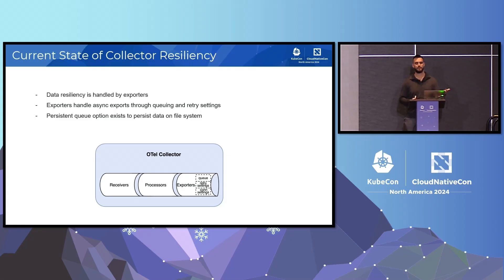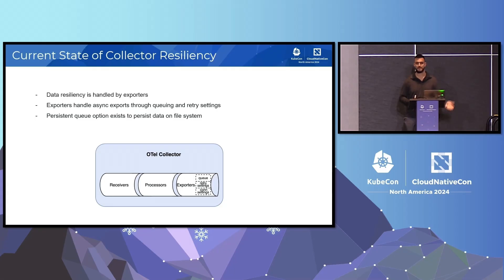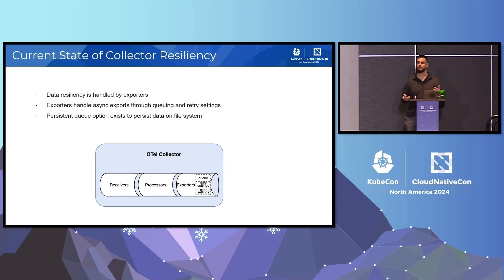In the case of the persistent queue, if my collector crashes and I have data in that queue, when the collector spins back up, that data won't be lost. But none of these really address the issue of downstream failures — how do I prevent a failing downstream service from causing all of my data to be lost?